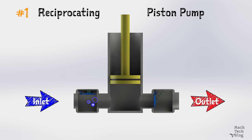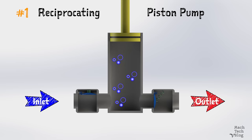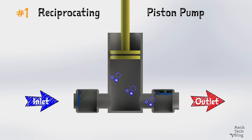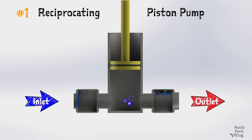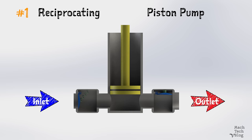As the valve on the suction side of the pump opens, the valve on the discharge side closes. On the discharge stroke, which is the downstroke here, the piston pushes on the fluid in the cylinder. The pressure rises. The suction valve now closes and the discharge valve opens to release fluid into the system.